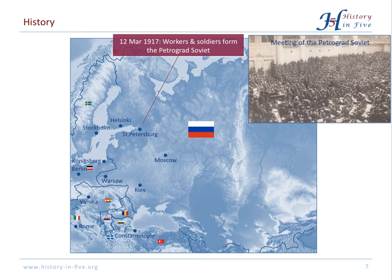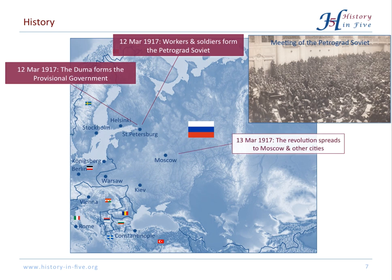On the 12th of March 1917, workers and soldiers formed the Petrograd Soviet, the core of the communist movement in Russia. On the same day, the Duma formed a Provisional Government. The revolution then spread to other cities, especially Moscow.